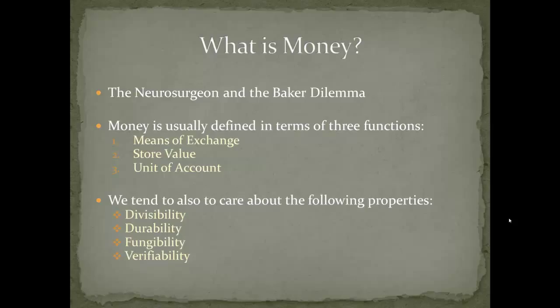Fungibility is another term — it comes from the commodity markets. Fungibility means we don't care about one unit versus another. If I pull out a dollar bill and you pull out a dollar bill, they're identical except for the serial number, and that doesn't matter in terms of value. You can think of it like bushels of wheat: one bushel, as long as it's the same size, ought to be treated the same as another. They're fundamentally fungible.